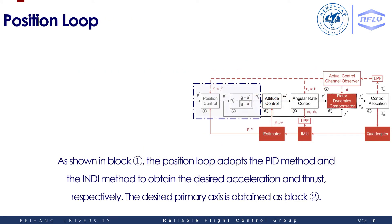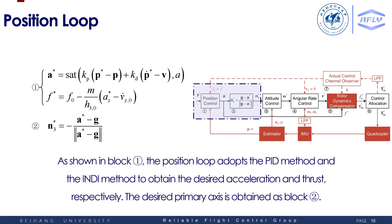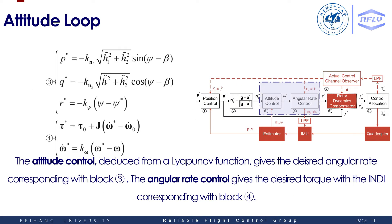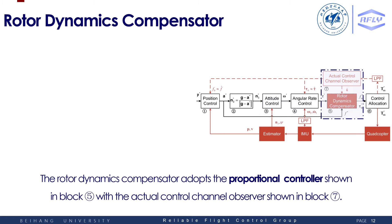As shown in block one, the position loop adopts the PID method and the incremental non-linear dynamic inversion method to obtain the desired acceleration and thrust respectively, and the desired primary axis is obtained as block two. In the attitude loop, the attitude control deduced from a Lyapunov function gives the desired angular rate corresponding with block three. The angular rate control gives the desired torque with the incremental non-linear dynamic inversion method, corresponding with block four. The rotor dynamics compensator adopts the proportional controller shown in block five, with the actual control channel observer shown in block seven.